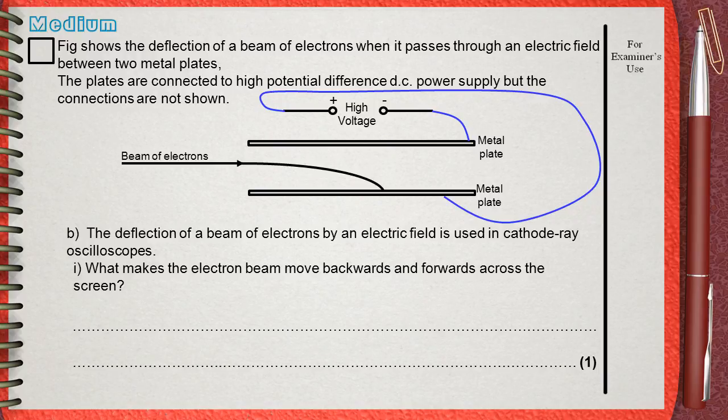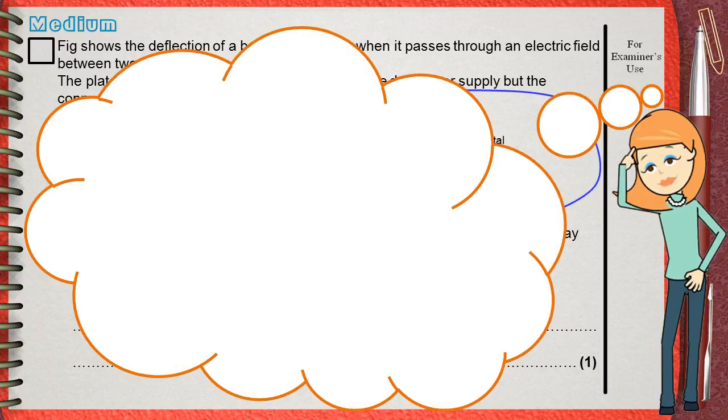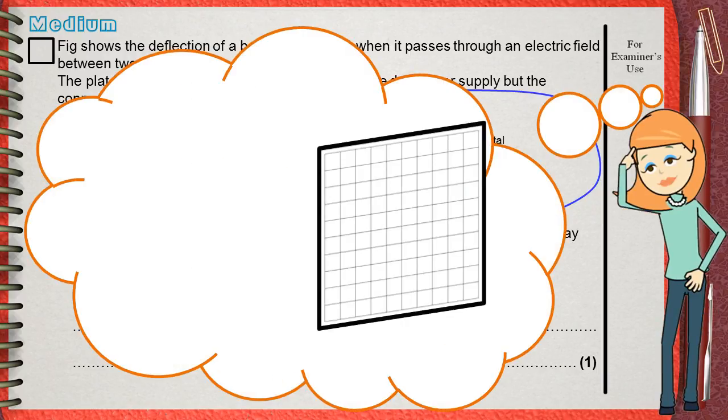Let's first understand the question. In the cathode ray oscilloscope, there is a screen. If the beam of electrons moves straight forward, it will hit the center of the screen giving a bright spot in the center of the screen.